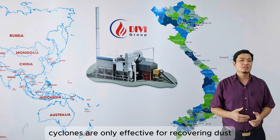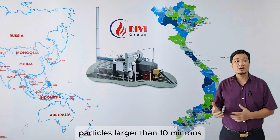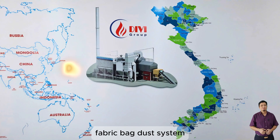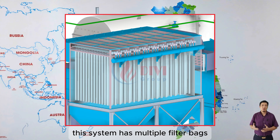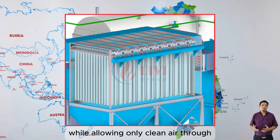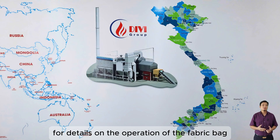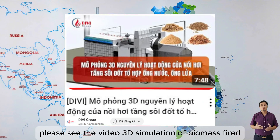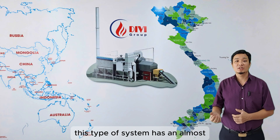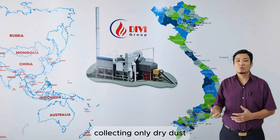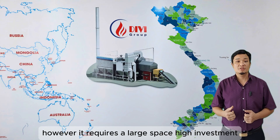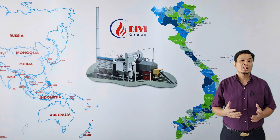For finer particles, other types of dust recovery systems are required. Fabric bag dust system: this system has multiple filter bags through which the smoke passes, trapping dust particles while allowing only clean air through. This type of system has an almost absolute dust recovery rate, collecting only dry dust, and the emissions appear nearly colorless. However, it requires a large space and has high investment and maintenance costs.